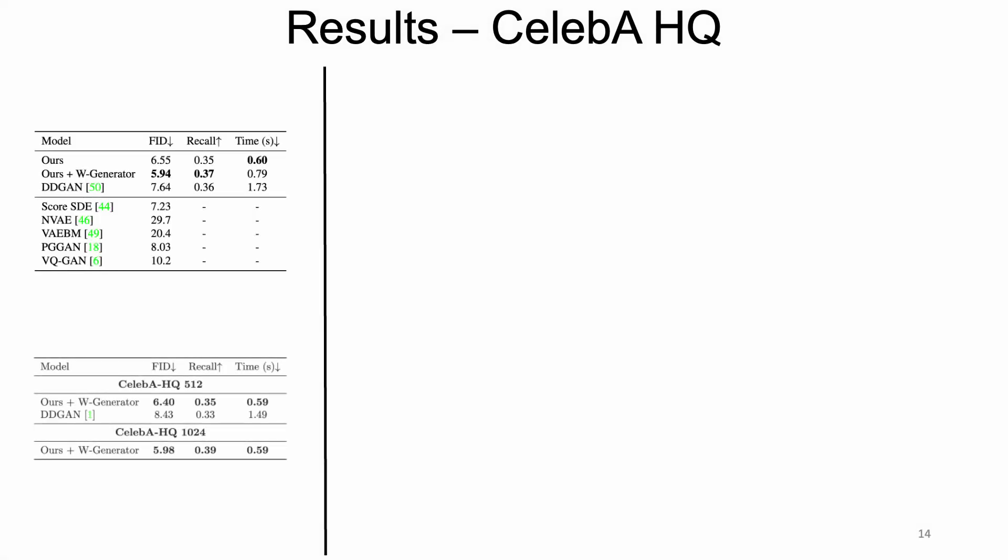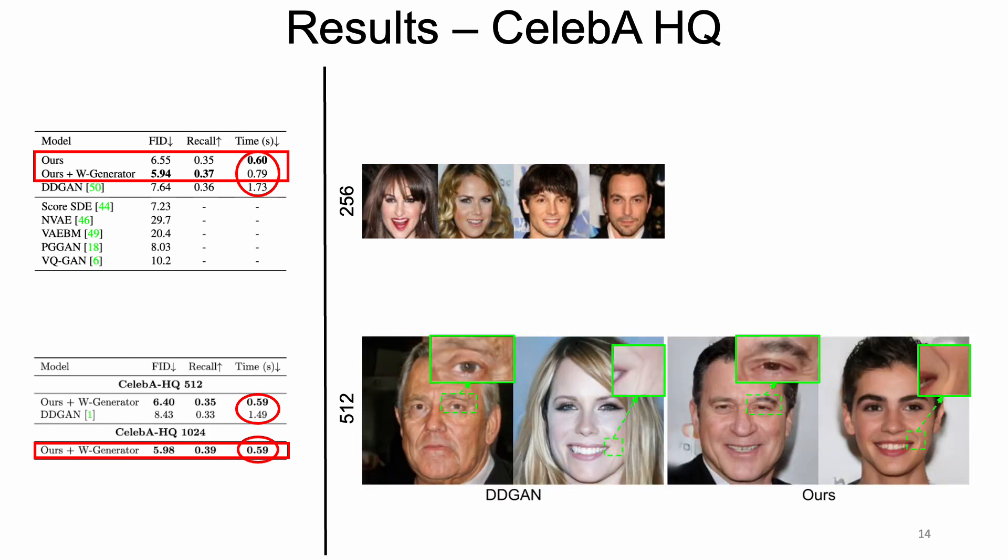We move to test our method on CelebA, a popular facial image benchmark. Overall, our method significantly outperforms the baseline and other existing methods by a substantial margin. Additionally, our approach provides two times faster inference time compared to DDGAN for both 256 and 512 resolution settings. On 1024 resolution, our method also yields an FID score of 5.98 while offering similar inference time as CelebA-HQ 512. For qualitative comparison, on CelebA 512, our method produces clearer details, such as eyebrows and wrinkles.